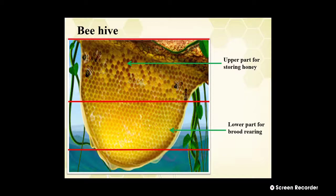This is the structure of the bee hive. As seen in the image, the upper part is for storing honey and the lower part is for brood rearing.